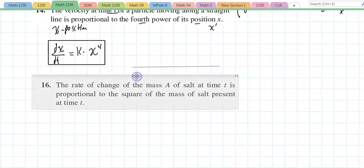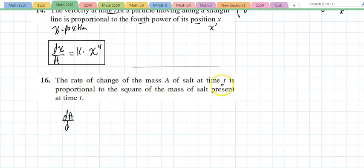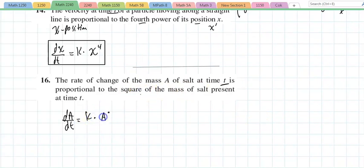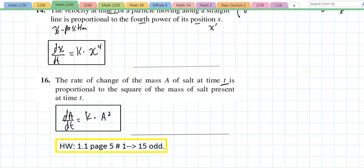One more: 'The rate of change of mass a with respect to time is proportional to the square of the mass present at time t.' So da/dt = k·a². That's the differential equation. And here's the homework for this section.